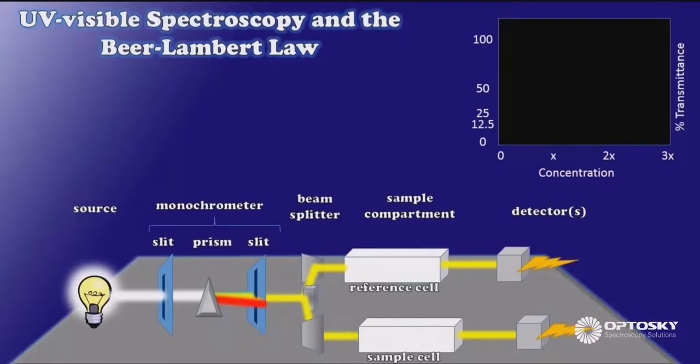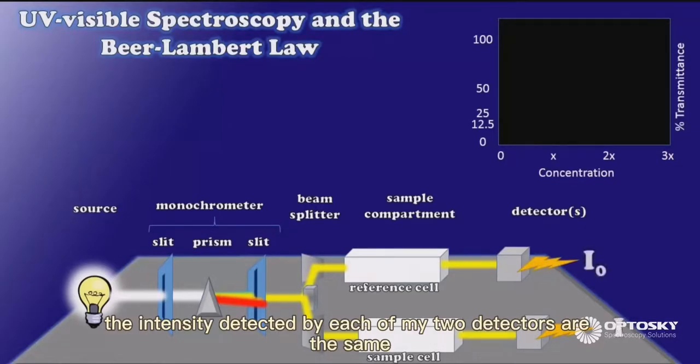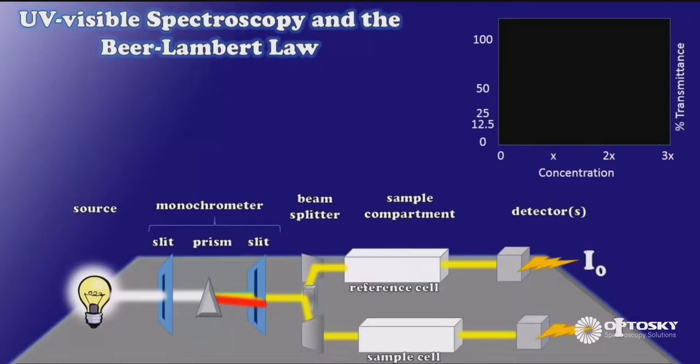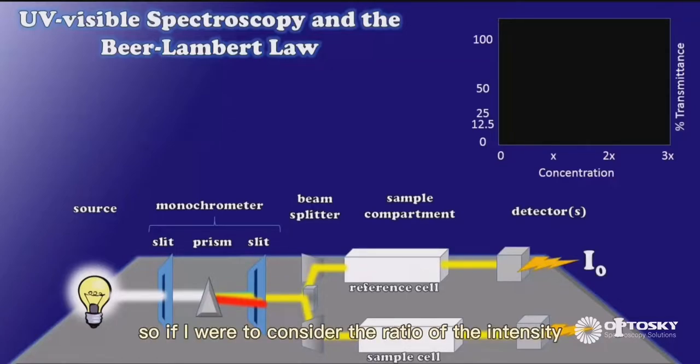So in this case, the intensity detected by each of my two detectors are the same. So if I were to consider the ratio of the intensity leaving the sample cell to that leaving the reference cell...